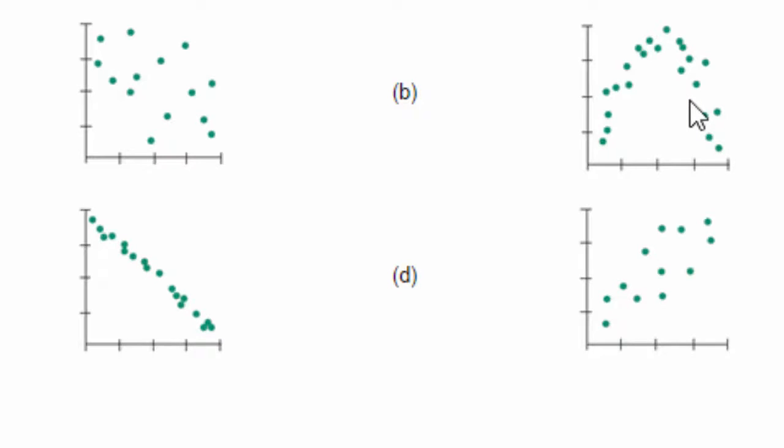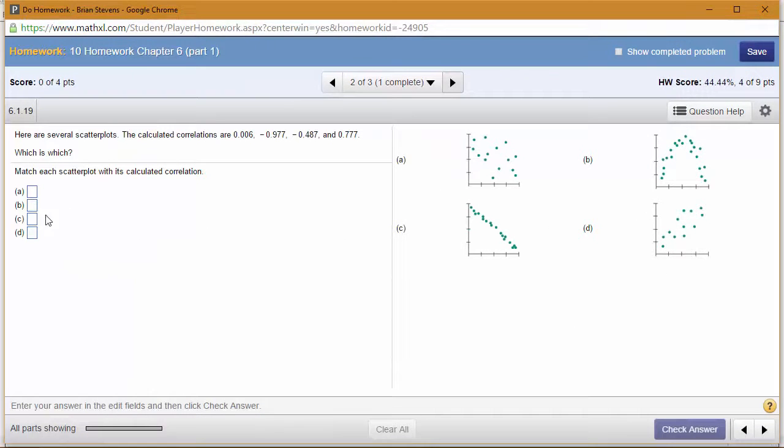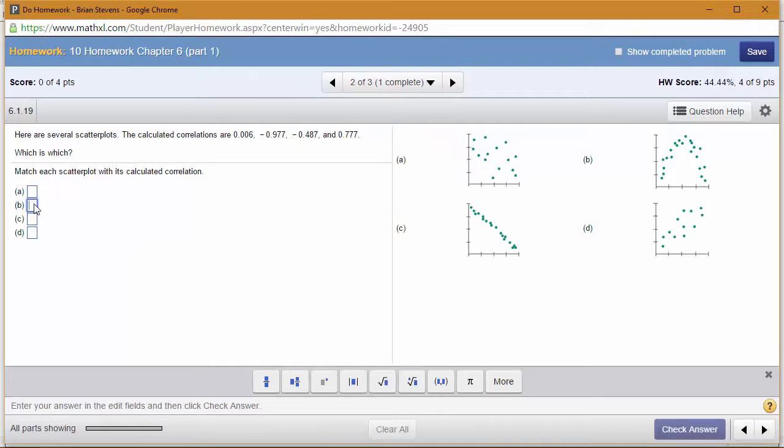With this in mind, this is going to have correlation close to zero. Remember, we can make an oval around it, which means correlation is close to zero. So B is going to have a correlation of 0.006. That is our weakest correlation. Now I want to point out it does have a strong relationship.